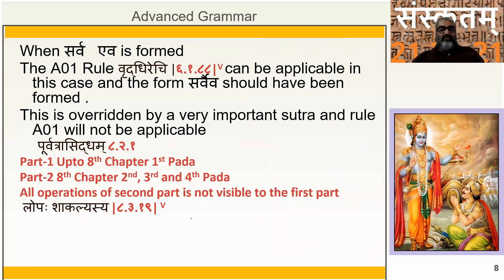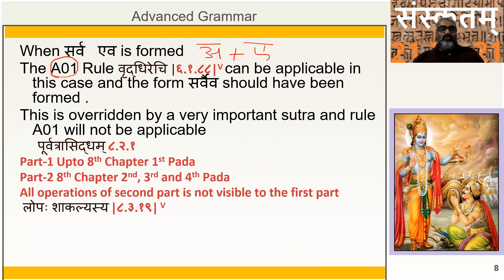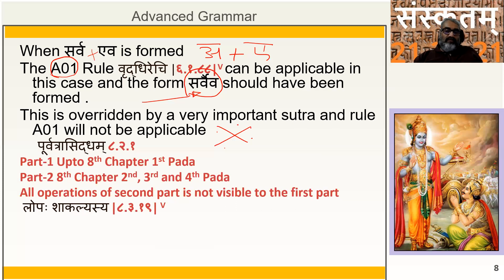Now when the form Sarva Eva is created, you again have A plus A coming. We learned the rule A01, which is Vriddhi Rechi. If you go by rule A01, the form should become Sarva Eva — because applying Vriddhi Rechi, Sarva plus Eva becomes Sarva Eva. So ideally this rupam should become Sarva Eva. However it does not, because of a very important Sutra which all of you must know — a beautiful concept that will confuse you unless you understand it.